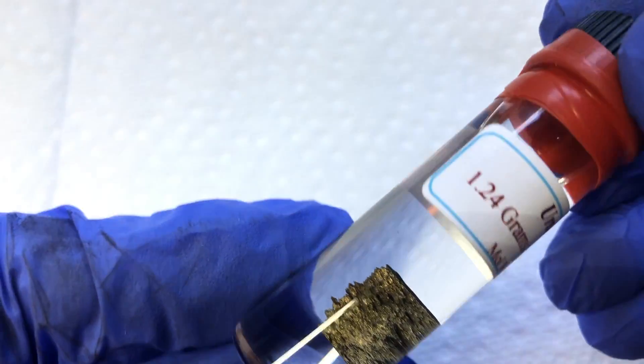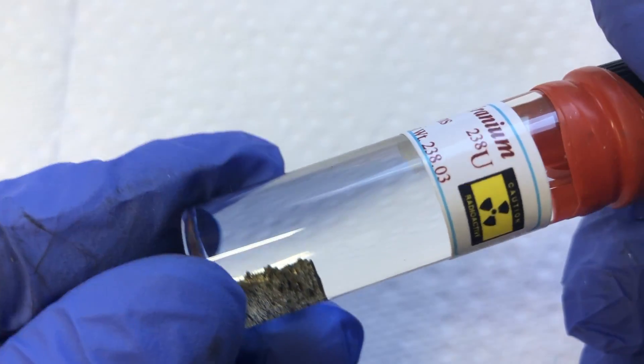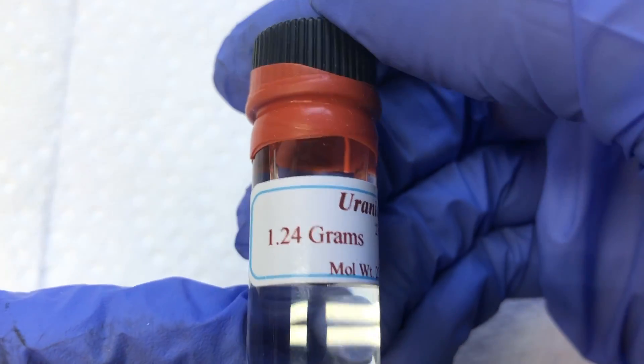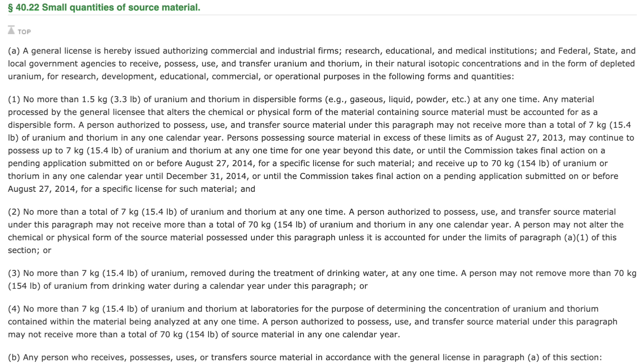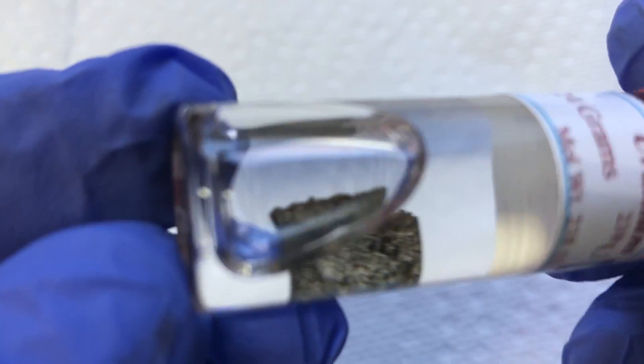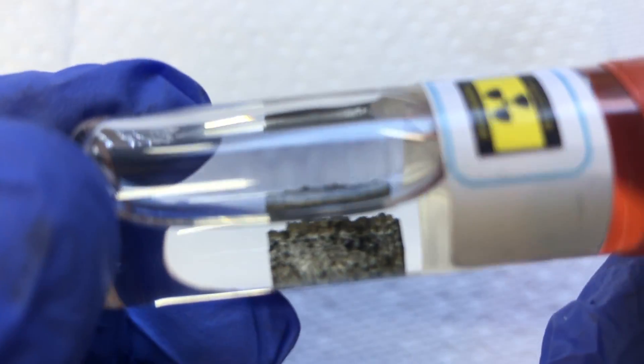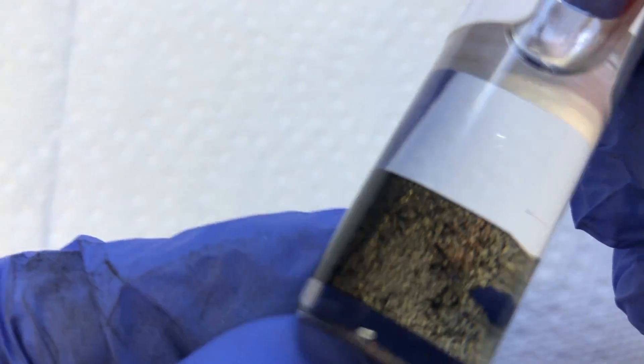The most common question about uranium is, is it legal? In the United States, yes it is. It's protected under the NRC guidelines of 40.22, small quantities of source material. As long as you keep in terms with the set forth, you will be fine to own uranium and uranium products.